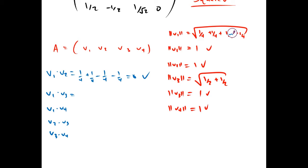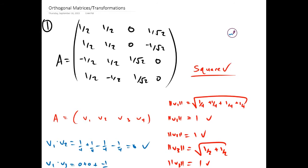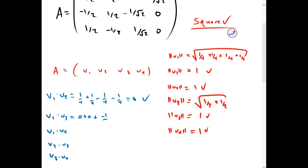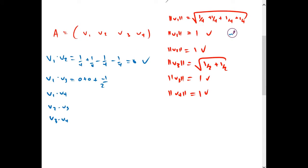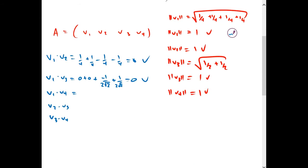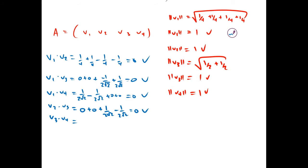For v1 dot v3, we get 0 plus 0, and we get -1/(2√2) plus 1/(2√2), which gives us 0. For v1 dot v4, we get 1/(2√2) minus 1/(2√2) plus 0 plus 0, which is 0. And v2 dot v3 gives us 0 plus 0 plus 0 plus 0, which equals 0.